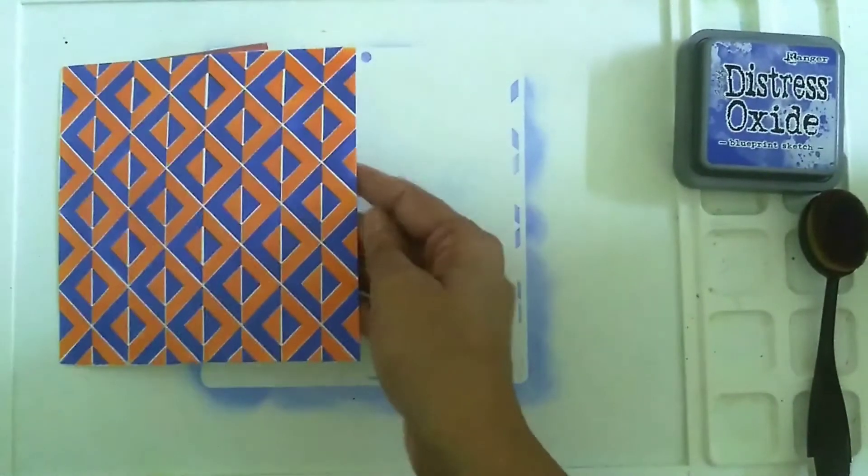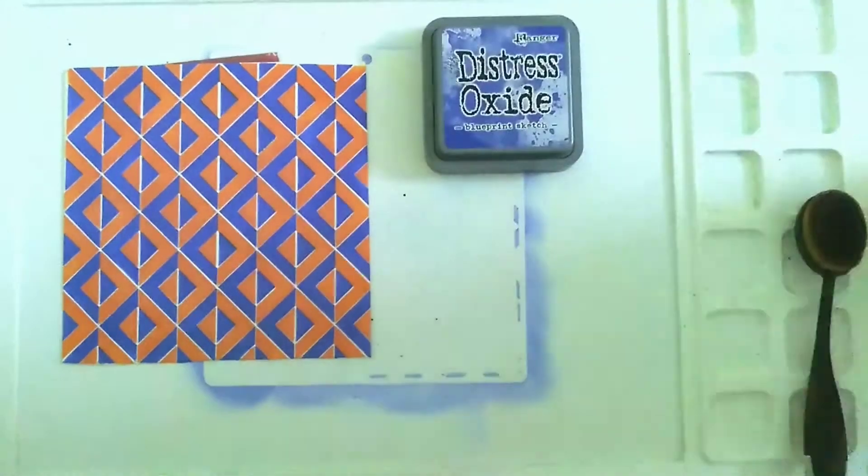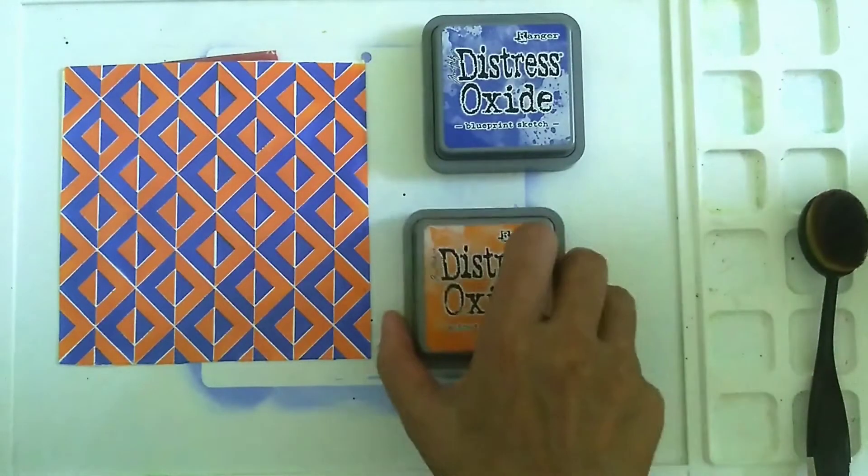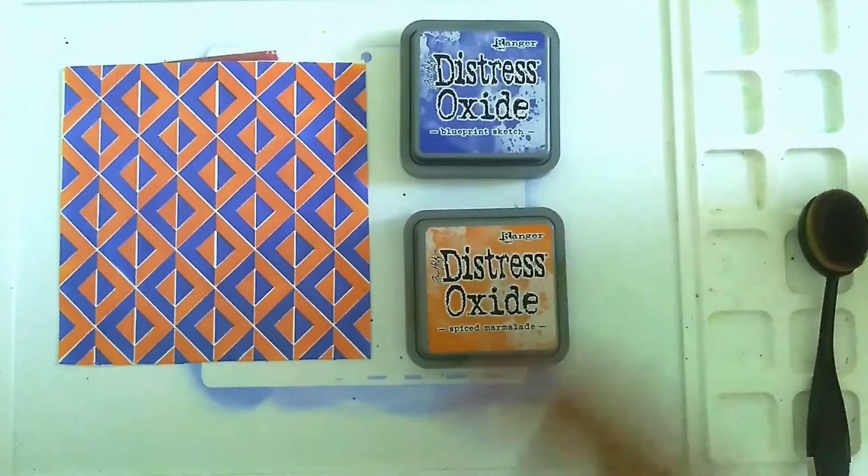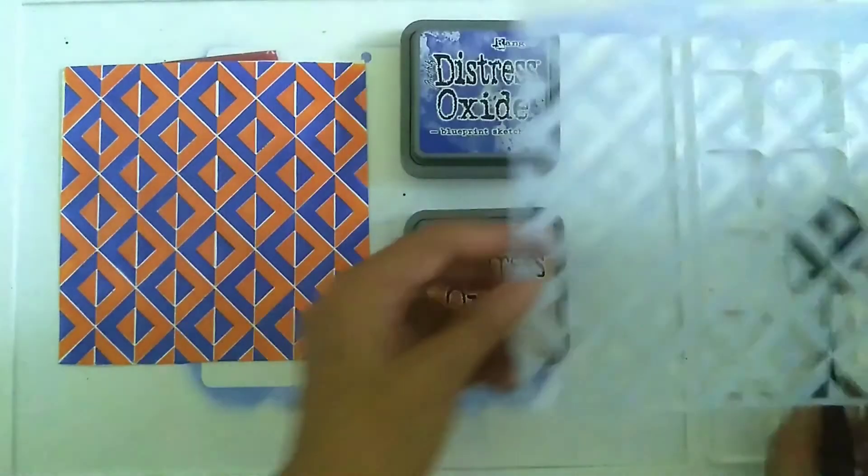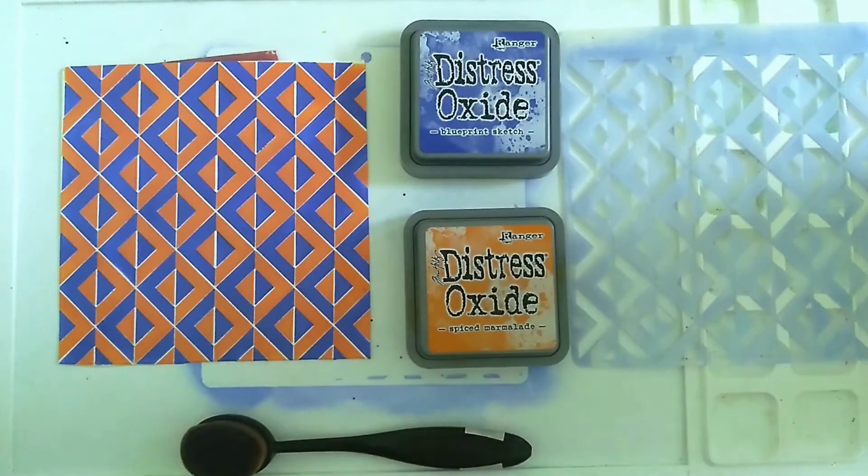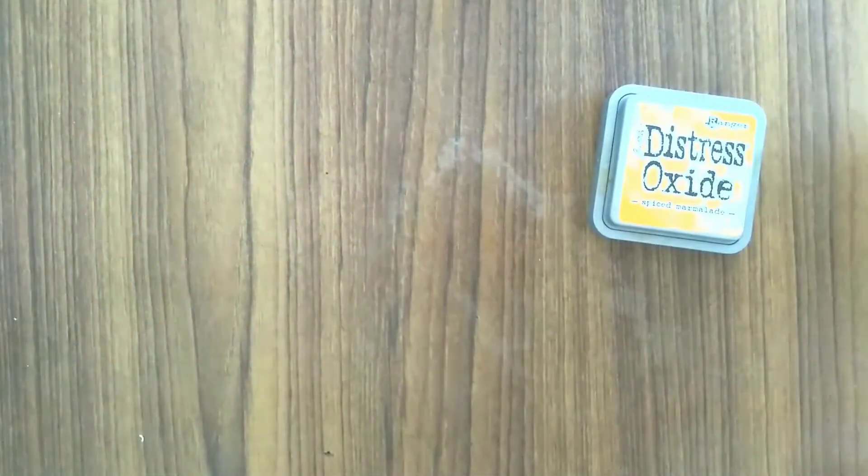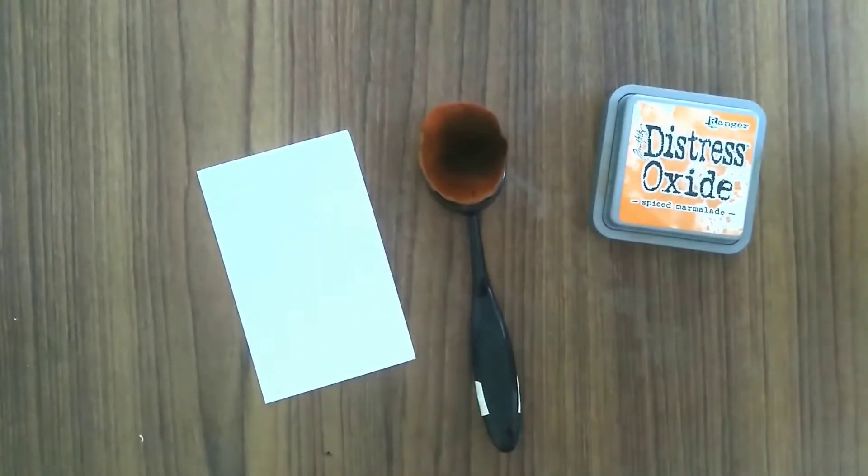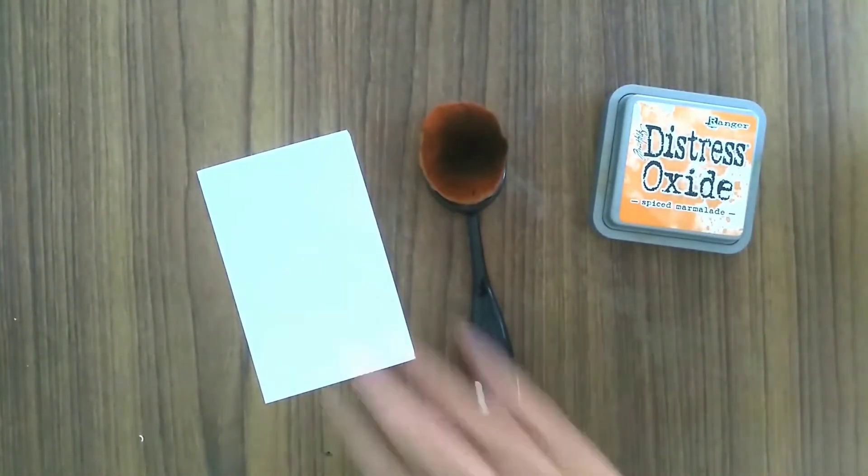With that, our background is complete. Now I will let the background air dry again. Here are all the components that I used - the bold background, the two distress oxide inks, and the stencil. Just remember to clean your stencil thoroughly before you put it away. Let's begin to make the card.